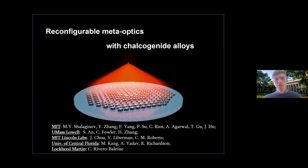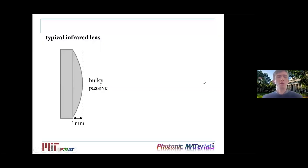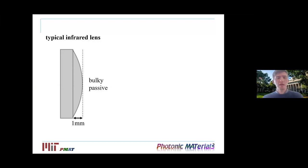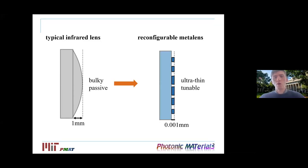A big mission in meta-optics is to go beyond traditional optical components — for example, lenses, which are currently quite bulky. There is definitely space to decrease their size. The holy grail of optics is making optical components tunable and active, which opens new avenues for dynamic optical devices. We use the approach of reconfigurable metalenses to achieve ultra-thin and tunable devices.